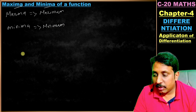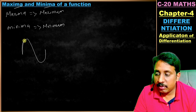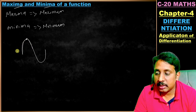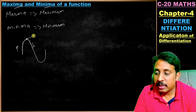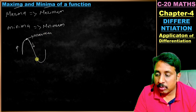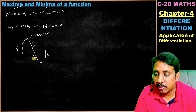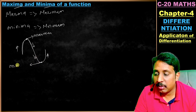When a function is continuous and one quantity varies, it reaches a peak value and then starts to decrease. That point is called the maximum value. Similarly, when it decreases to a least value and then starts increasing again, that point is called the minimum value.